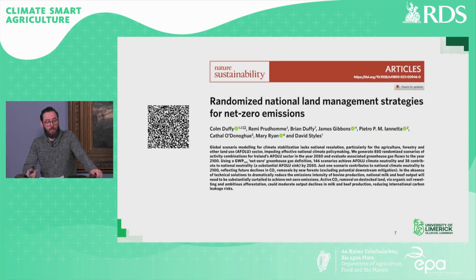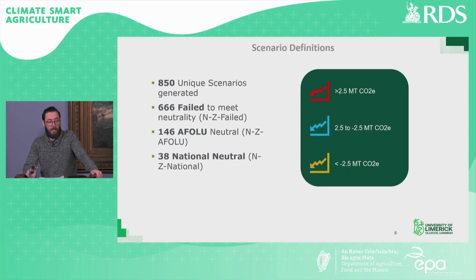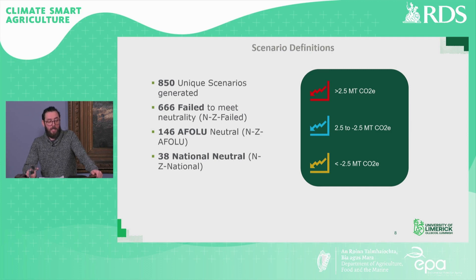Our first tranche of scenarios was published recently in Nature Sustainability. We generated 850 unique scenarios and assessed neutrality to 2050 utilizing the GWP100 metric — the 100-year time horizon global warming potentials relative to CO2 for various greenhouse gases. 666 scenarios were classified as failing to meet neutrality, defined as exceeding 2.5 megatons of CO2 equivalent. 146 were classified as AFOLU neutral, defined as between 2.5 and negative 2.5 megatons CO2 equivalent. 38 were classified as nationally neutral, defined as exceeding negative 2.5 megatons of CO2 equivalent.